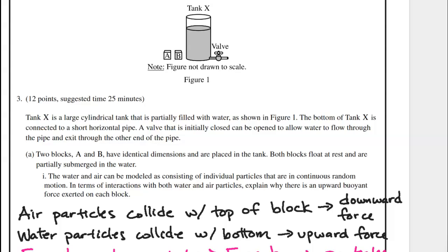Tank X is a large cylindrical tank that is partially filled with water as shown in Figure 1. The bottom of Tank X is connected to a short horizontal pipe. A valve that is initially closed can be opened to allow water to flow through the pipe and exit through the other end of the pipe. Two blocks, A and B, have identical dimensions and are placed in the tank. Both blocks float at rest and are partially submerged in the water. The water and air can be modeled as consisting of individual particles that are in continuous random motion. In terms of interactions with both water and air particles, explain why there is an upward buoyant force exerted on each block.